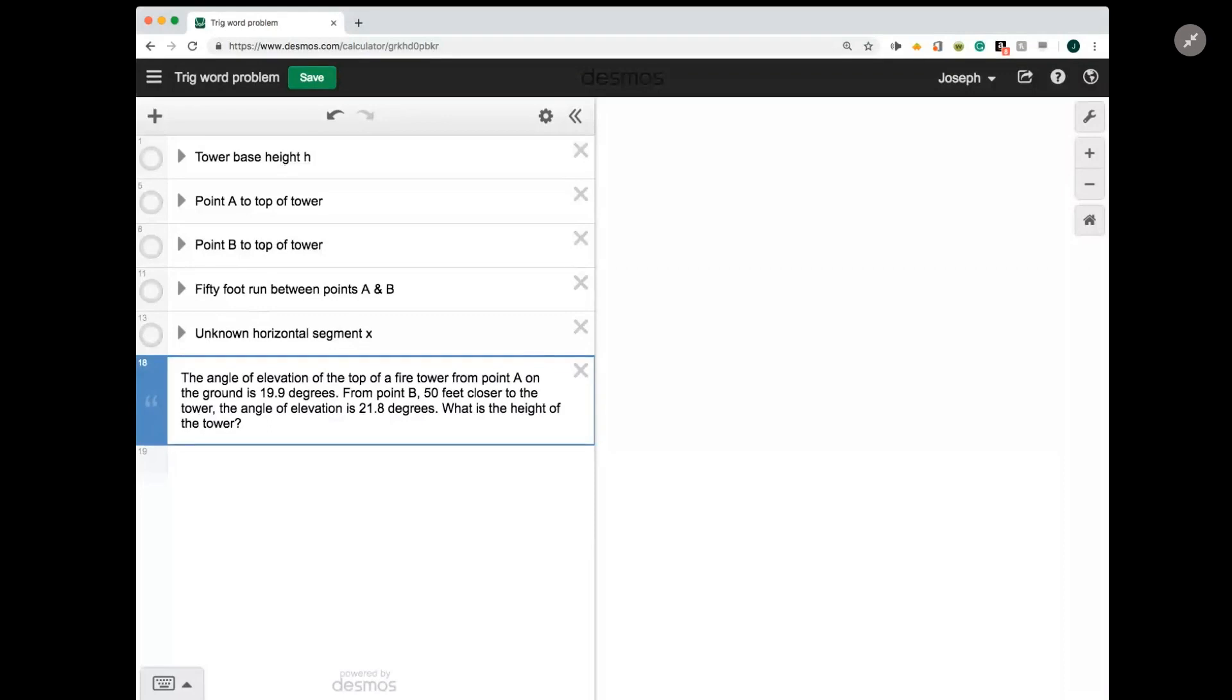So again, we're going to be measuring an angle of elevation from a point A towards a fire tower. So there's the angle of elevation from point A to the top of a fire tower, and they're asking for the height of the tower, and so we'll just call that height h.